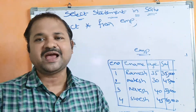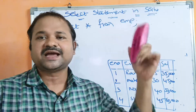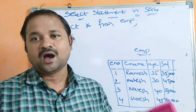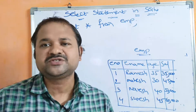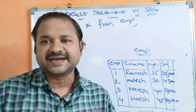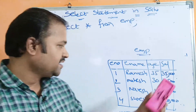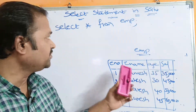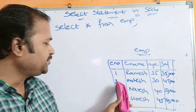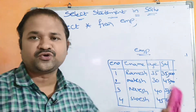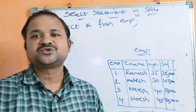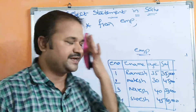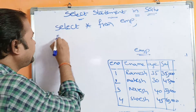When we use SELECT * FROM EMP, the entire table data will get displayed — all the rows from the table will get displayed. How many rows are there in this table? There are 4 rows, so all 4 rows will get displayed.